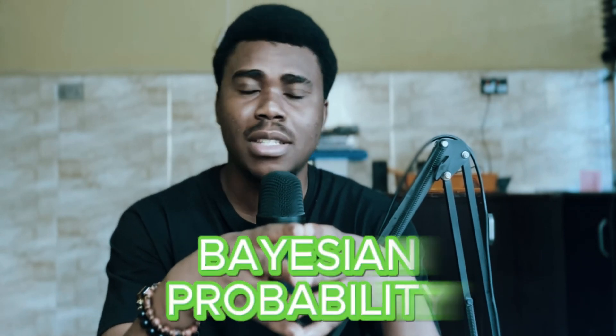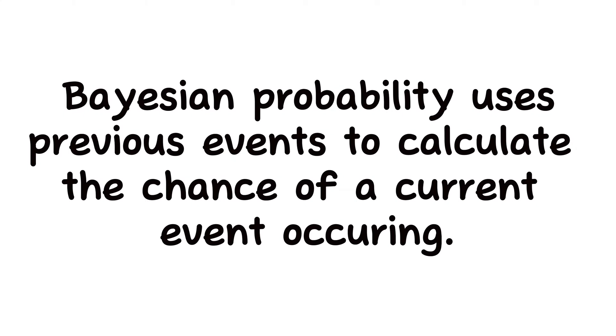One downside of the frequentist approach is that in real life, some experiments cannot be performed several times. For example, if you're a doctor and your patient has cancer, you can't keep treating the cancer multiple times just to get the chance that the patient will survive. This is where Bayesian probability comes in. The Bayesian probability is based on Bayes' theorem, and what this approach does is calculate the probability that an event will happen right now, based on past events — using details from previous occurrences to determine the probability of the current event.